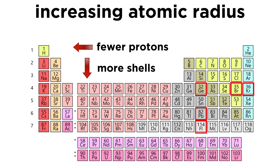We also know that atomic radius increases going down on the periodic table, because each time we go down one period, we're adding an entire shell. And so that certainly is going to make the atom quite a bit larger by adding an entire new shell.